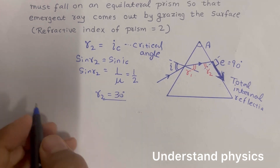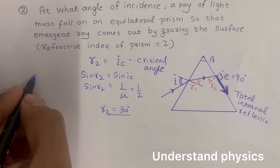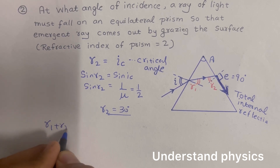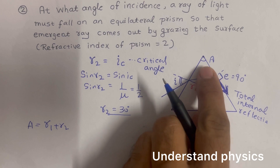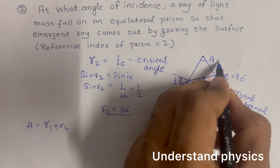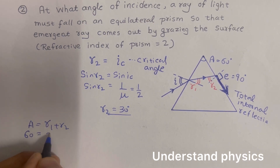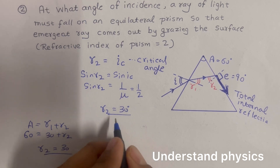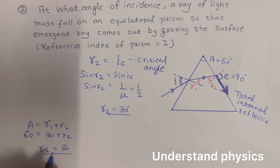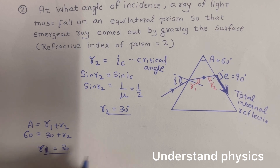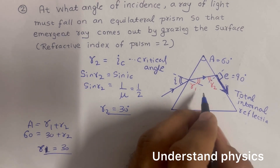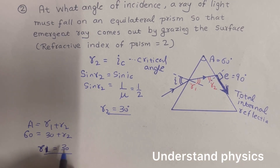Since sine r2 equals 1/2, r2 equals 30 degrees. Now r1 plus r2 equals A, the angle of the prism, which is 60 degrees for the equilateral prism. Substituting r2 as 30 degrees, r1 also comes out to be 30 degrees.